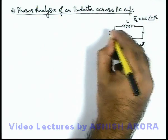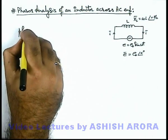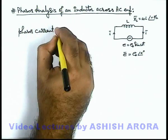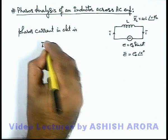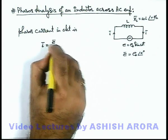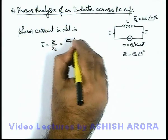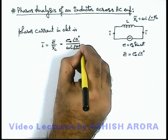Then we can easily analyze what phasor current flows through the circuit. So here we can write phasor current in circuit. In this situation it can be written as I phasor equals EMF phasor by XL phasor, by Ohm's law. And if we substitute the value, it is E₀ angle zero degree divided by ωL angle plus π/2.